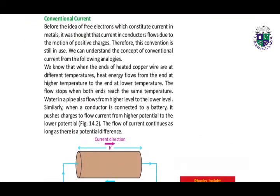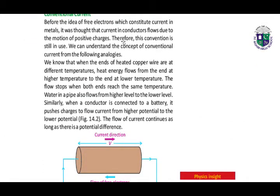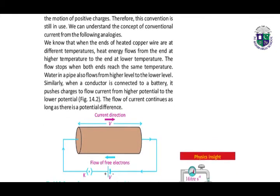Our next topic is about the conventional current. Before the idea of free electrons which constitute current in metals, it was thought that current in conductors flows due to the motion of positive charges; therefore this convention is still in use. We can understand the concept of conventional current from the following analogies. Before the concept of free electrons, we had the concept of conventional current.